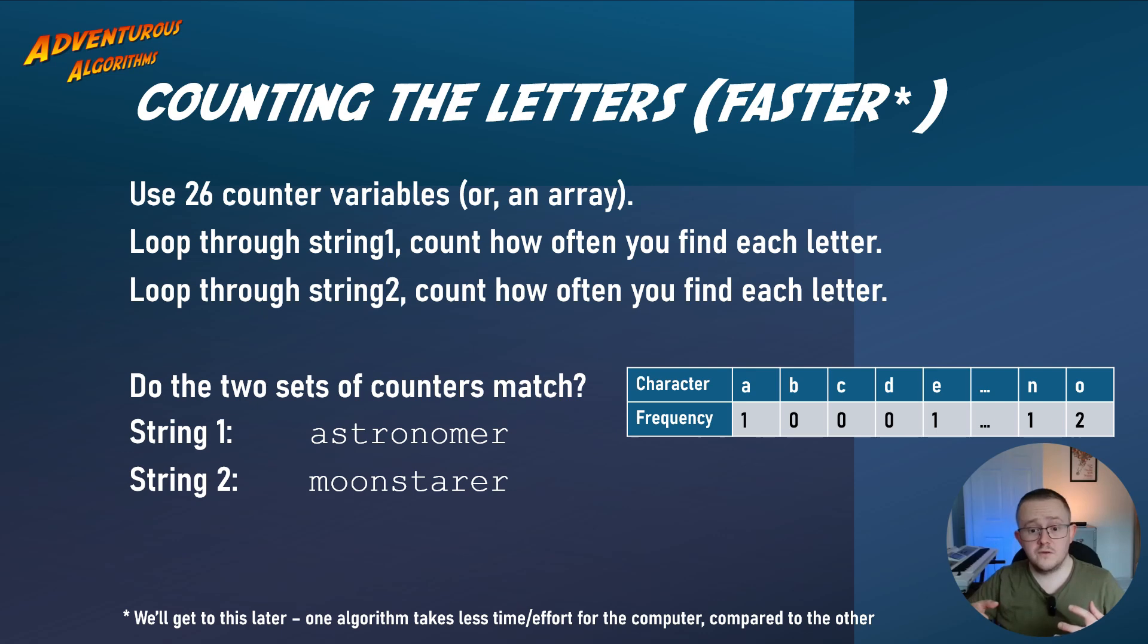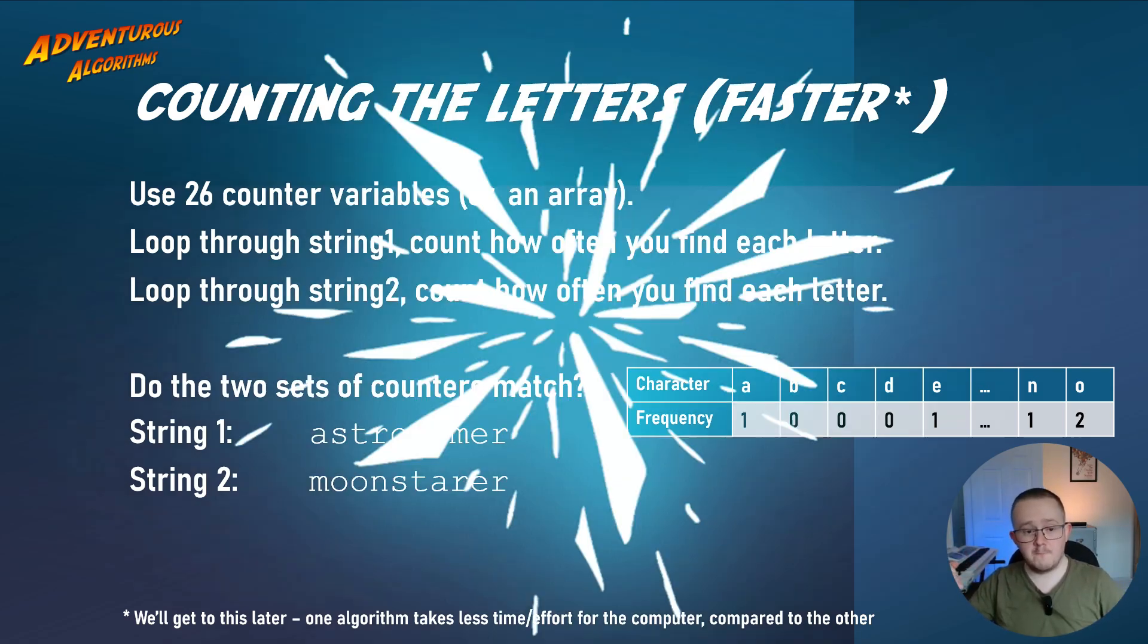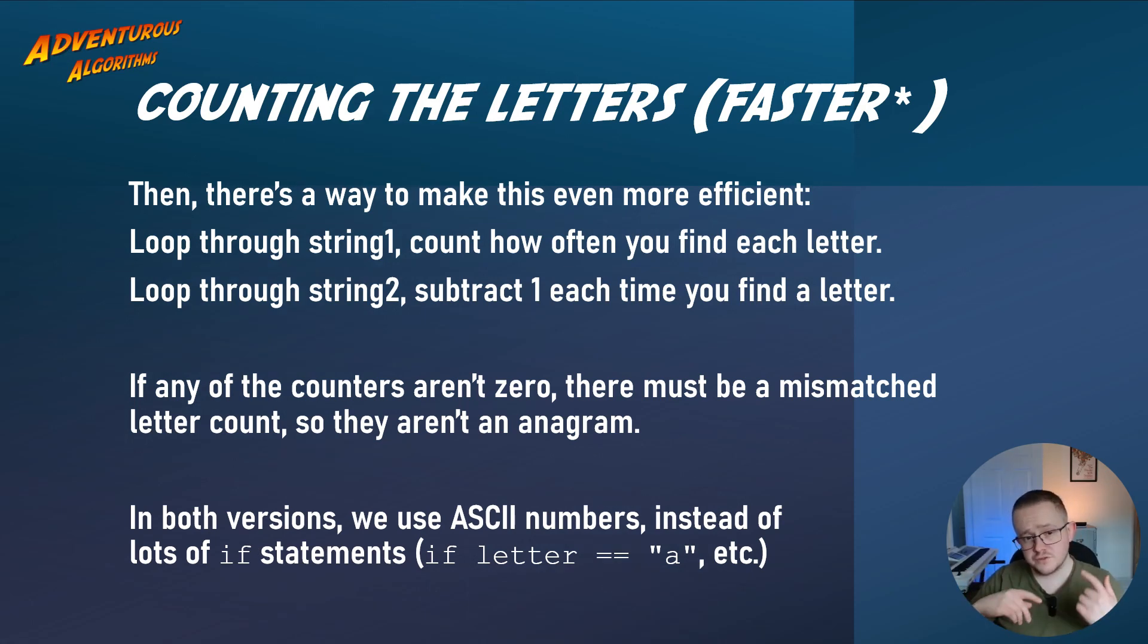Now another algorithm that we could use is counting the letters. And I've said there it's faster, and I'll get into that at the end of the video, why this is faster, because it looks as if it's more code. The way this works, you have 26 counter variables. So you're counting how many times A appears and how many times B appears and so on. We loop through the string and we count how many times you find each letter. Then we loop through the second string and we say how many times you find each letter. And if those patterns of counts match, if the first one has the same number of A's as the second one, and the first one has the same number of B's and the same number of C's, and all the way up to Z, and it matches all the way, then that must be an anagram. In both versions, we're going to use ASCII numbers.